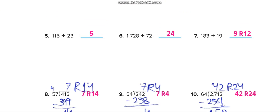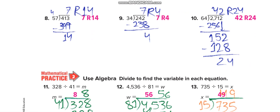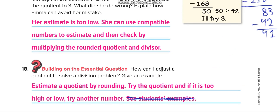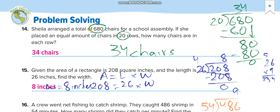She arranged a total of 680 chairs for a school assembly. If she placed an equal amount of chairs in 20 rows, we divide: 680 divided by 20 equals 34 chairs.